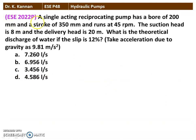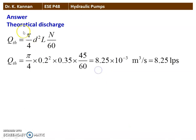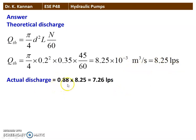The next question from the 2022 question paper: A single acting reciprocating pump has a bore of 200 millimeter, stroke of 350 millimeter, and runs at 45 RPM. The suction head is 8 meter and the delivery head is 20 meter. What is the theoretical discharge of water if the slip is 12%? Take g = 9.81 m/s². The theoretical discharge = (pi/4) × 0.2² × 0.35 × 45/60 = 8.25 × 10⁻³ cubic meters per second = 8.25 liters per second. Actual discharge = 0.88 × theoretical discharge = 7.26 liters per second. The correct answer is 7.260 liters per second.